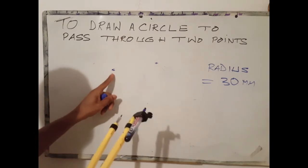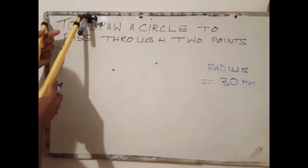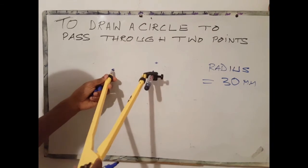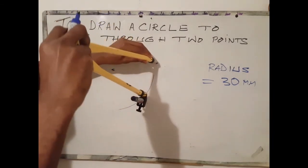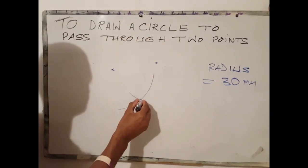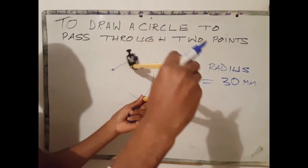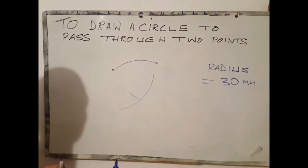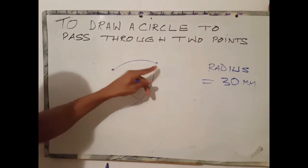And we want an arc of a specific radius to pass through or to join these points using an arc of a specific radius. Say I want it to be 50. Simply open my compass to 50. Using the first point as center, describe an arc. Go to the other side. Same radius. Describe an arc. At the point where both arcs meet here, use that point as center. That's where we get an arc of a given radius to touch two points.